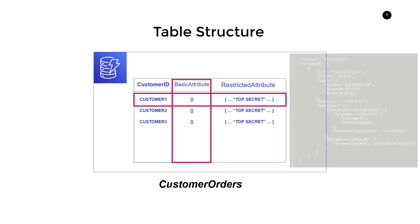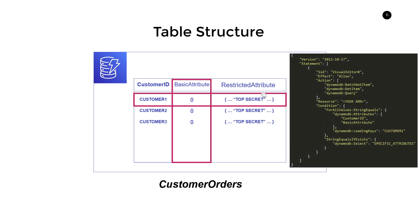To craft this policy, we just combine both concepts. We use read actions for read-only access, then for DynamoDB:Attributes we specify customer ID and basic attribute. The StringEqualsIfExists DynamoDB:Select SpecificAttributes completes the attribute-level access control. Then we add DynamoDB:LeadingKeys with the value customer one for row-level access. With this policy, we restrict access to customer one's row and expose only customer ID and basic attribute to the user.